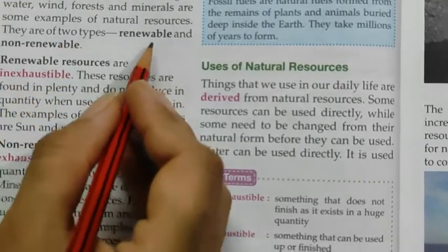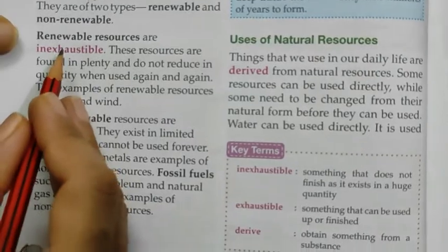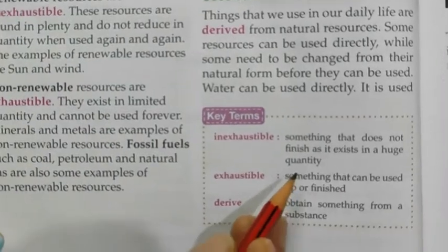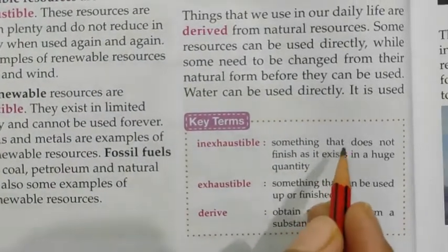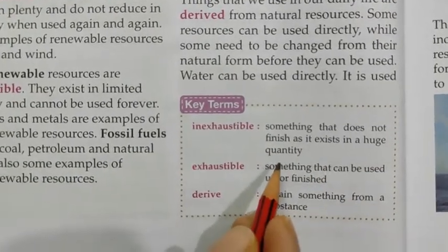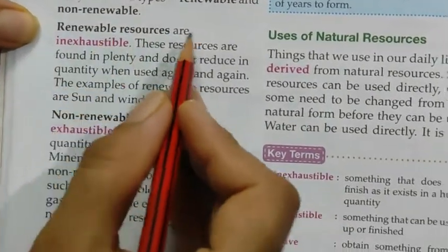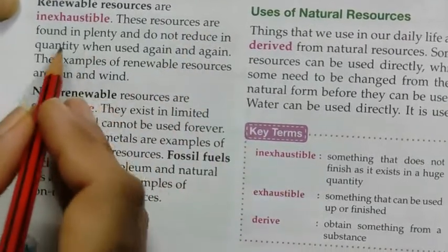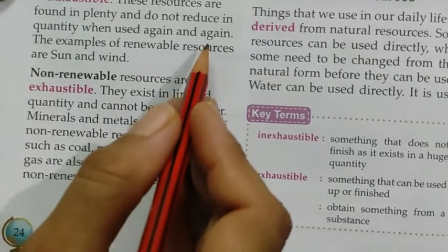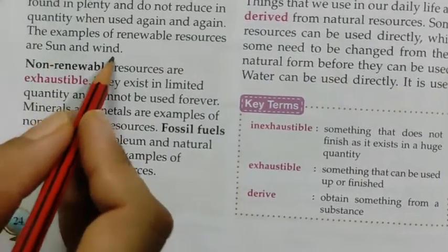There are two types: renewable and non-renewable. Renewable resources are inexhaustible — something that does not finish as it exists in a huge quantity. These resources are found in plenty and do not reduce in quantity when used again and again. Examples of renewable resources are sun and wind.